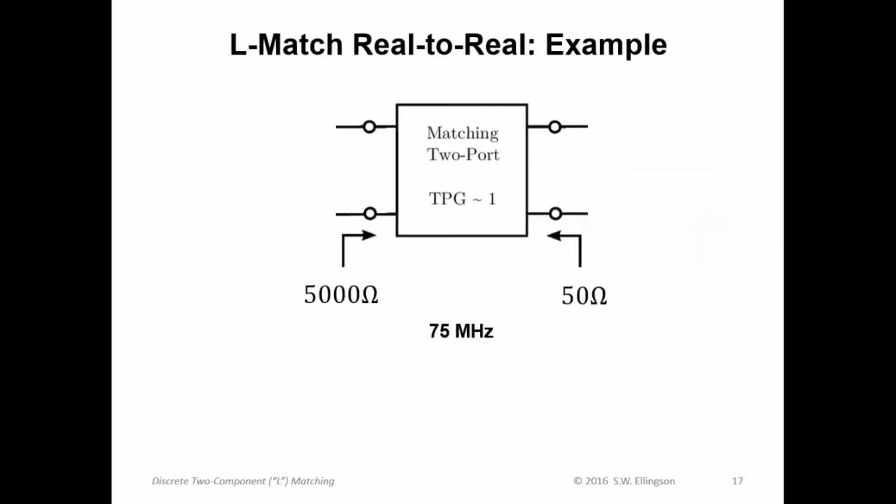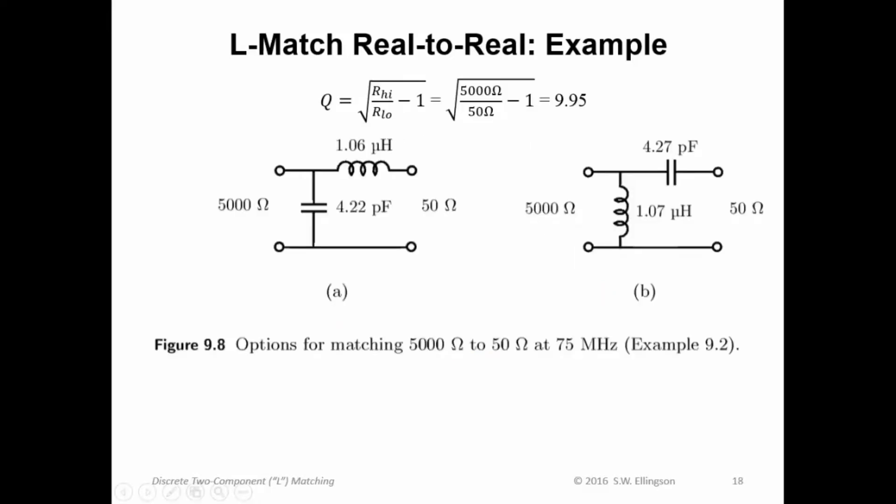Okay, let's do an example. In this case, we're interfacing 5,000 ohms, or 5 kilohms, to 50 ohms, and we're going to do it at 75 megahertz. Here's all you have to do. You compute Q. Q, in this case, is 9.95.